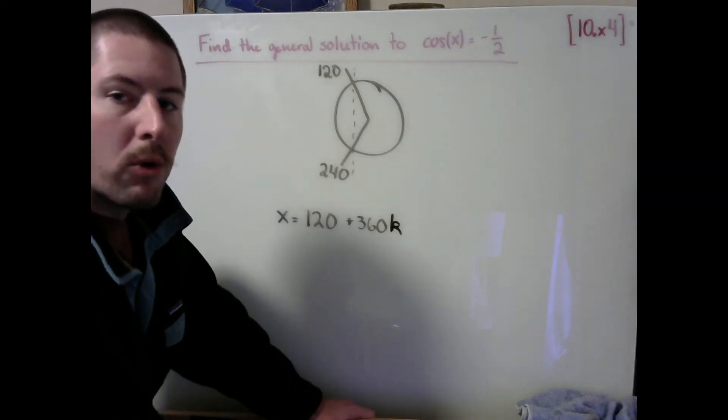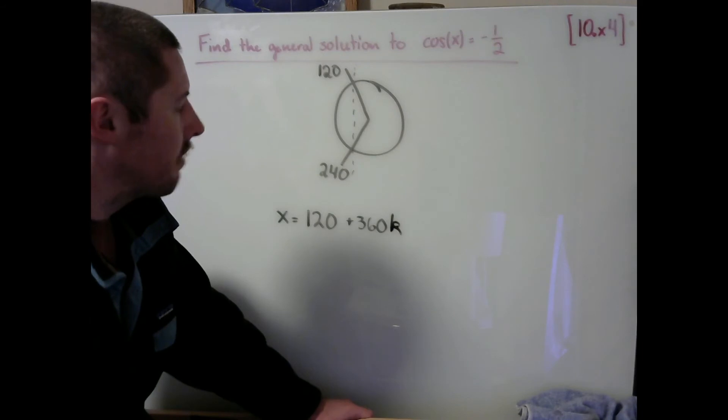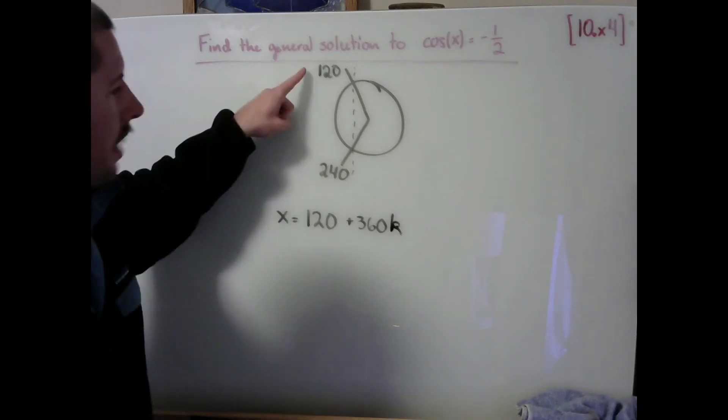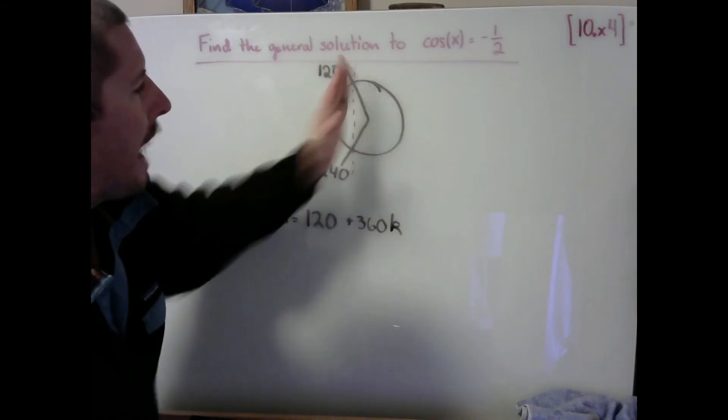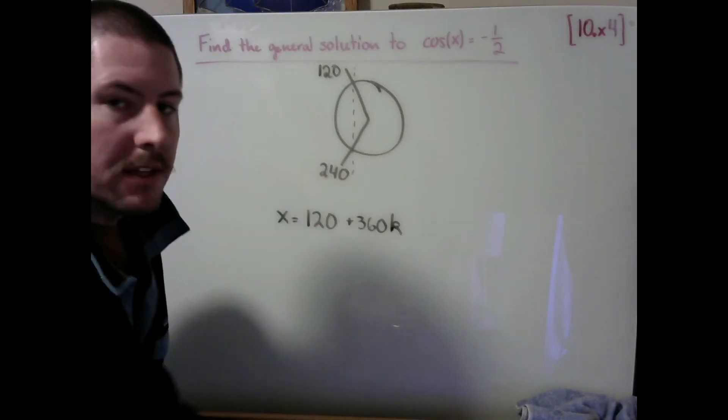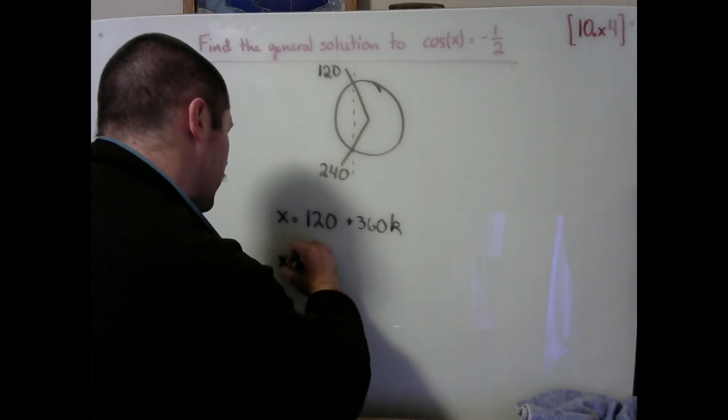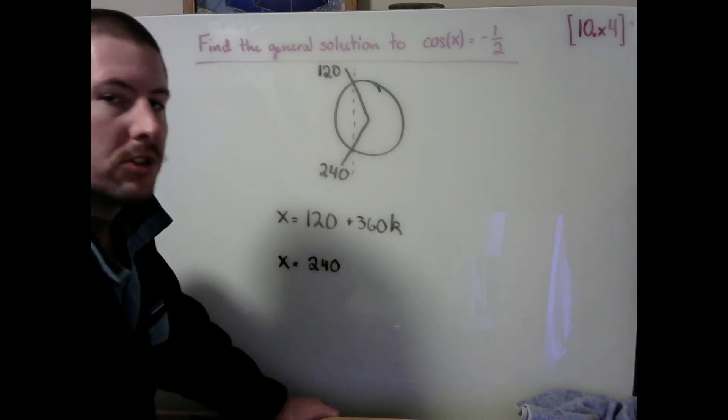I'm going to give a little bit more detail as to what K is, but let's make a similar statement here for our other piece of our solution. The other angles that I know are going to result in us landing one-half unit to the left of the origin on our unit circle are based off of this 240 degree angle here. So the other piece to my solution should say 240 degrees is a solution.